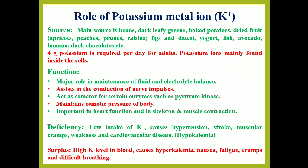Now the role of potassium metal ion in the biological system. The main food sources in which potassium is present include dark leafy greens, baked potatoes, avocado, fish, dark chocolates, banana, apricots, yogurt, etc. Almost 4 grams of potassium is required per day. It is mainly present inside the cell. Its major role is to balance electrolytes and fluid in our body. It helps in the conduction of nerve impulses with sodium ions. It acts as a co-factor for certain enzymes like pyruvate kinase. It maintains osmotic pressure and is important for heart functioning and muscle contractions.